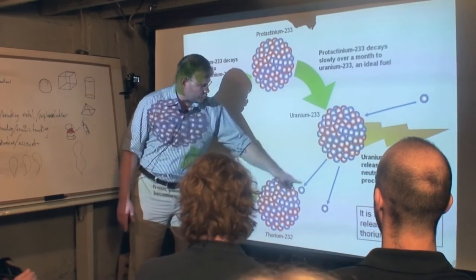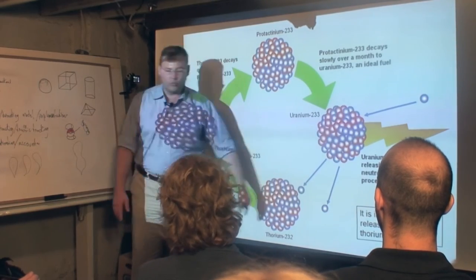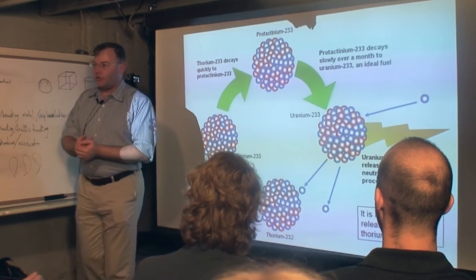So you need one of those neutrons to go find another thorium and you need another one of those neutrons to find another uranium-233 to continue the reaction.